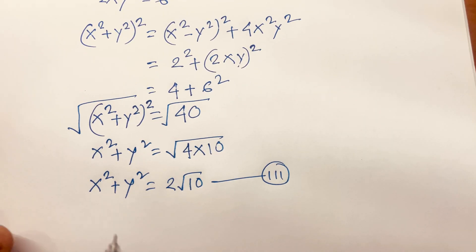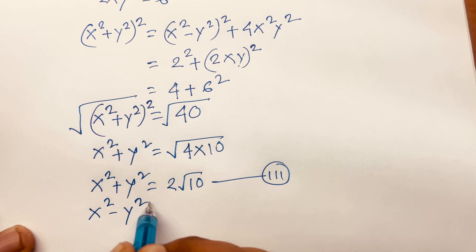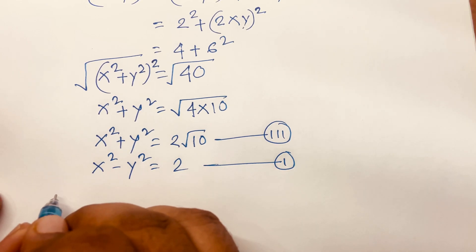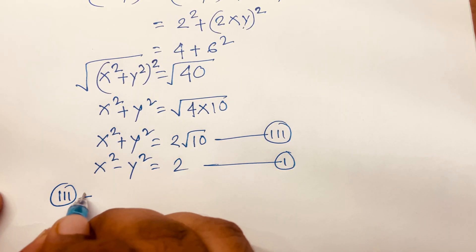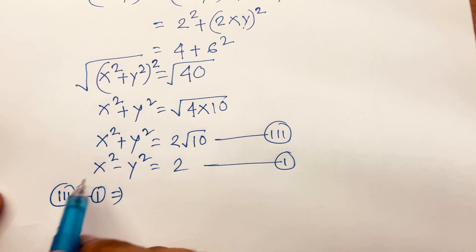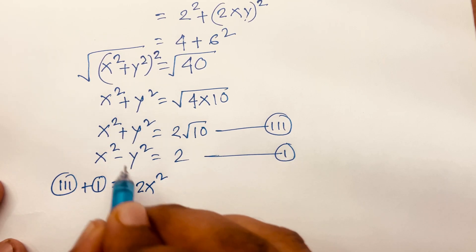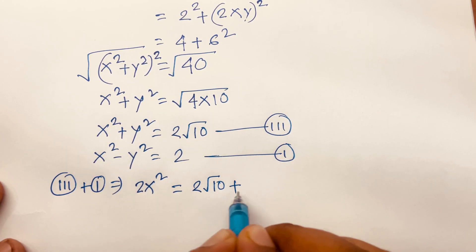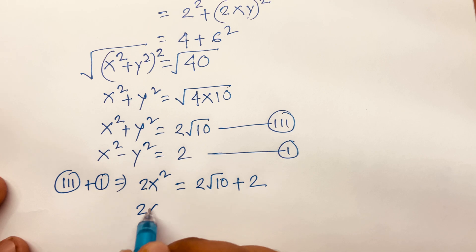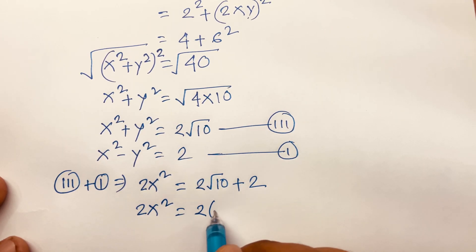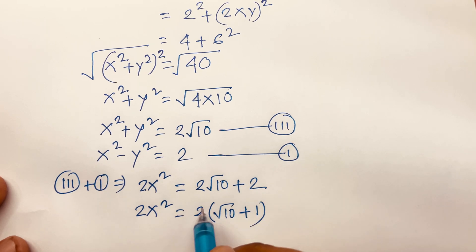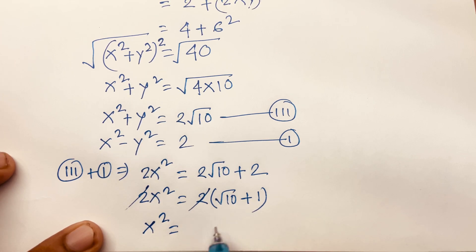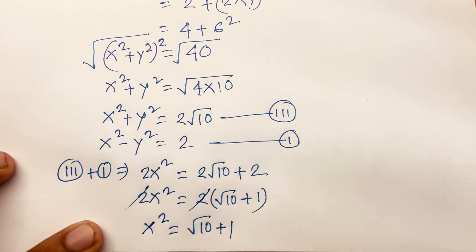Adding the third equation and the first equation: (x² + y²) + (x² - y²) = 2√10 + 2, giving 2x² = 2(√10 + 1). Dividing by 2, x² = √10 + 1.